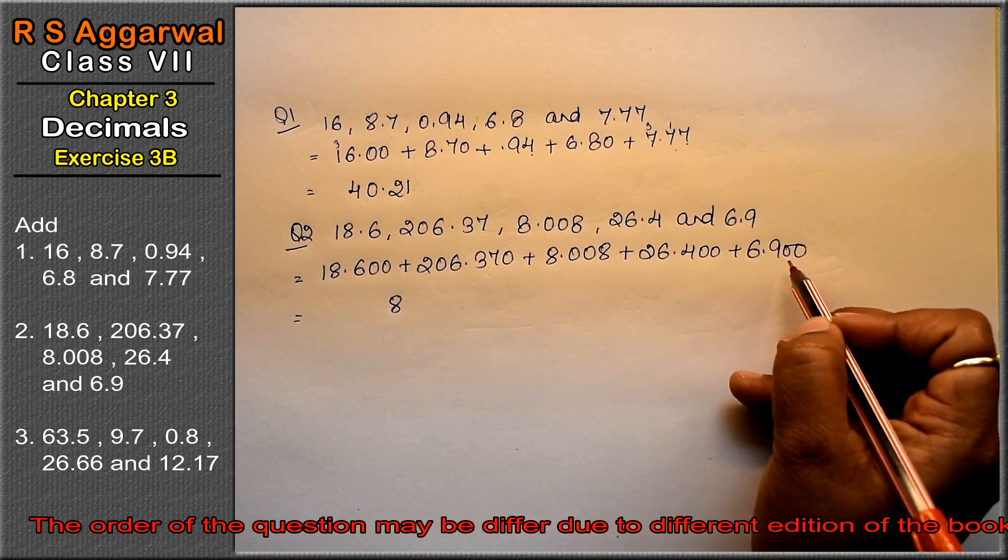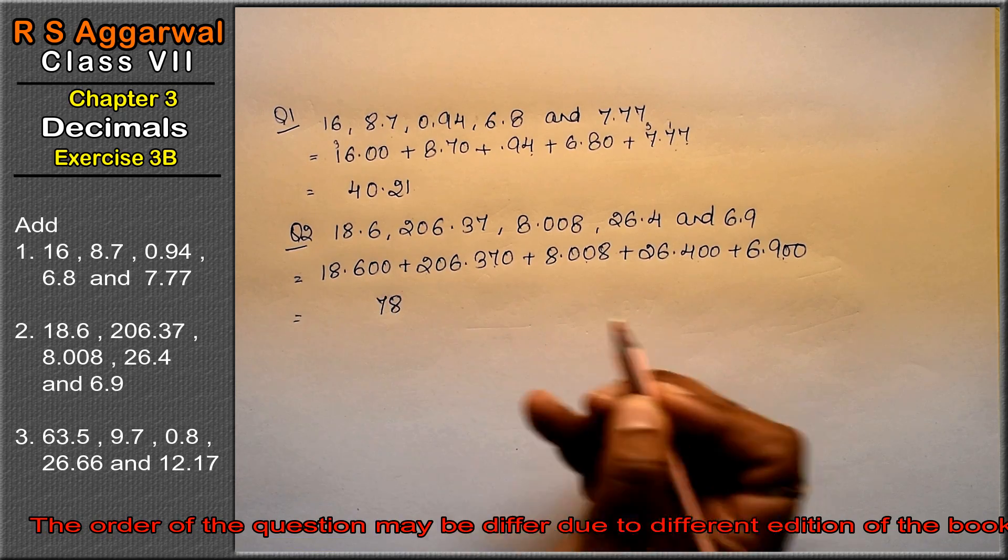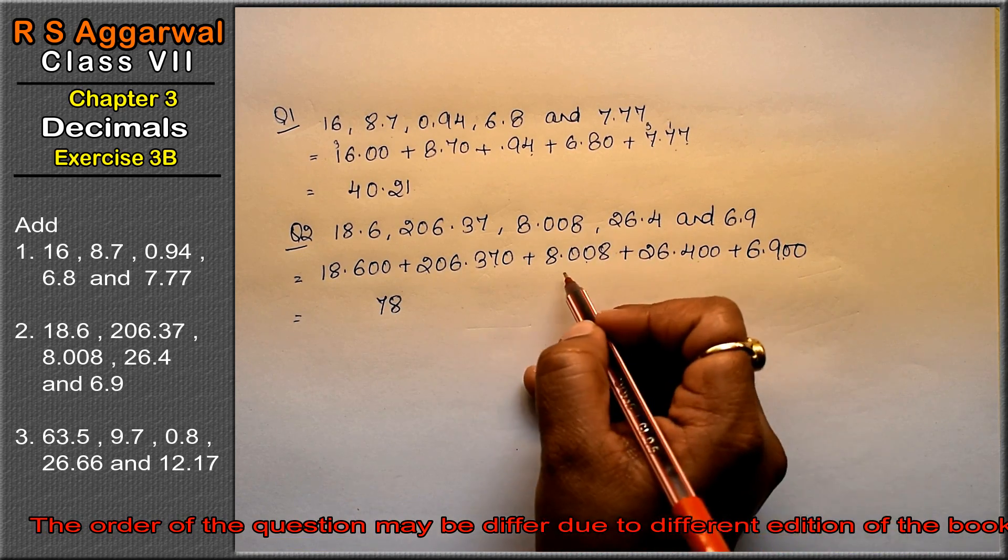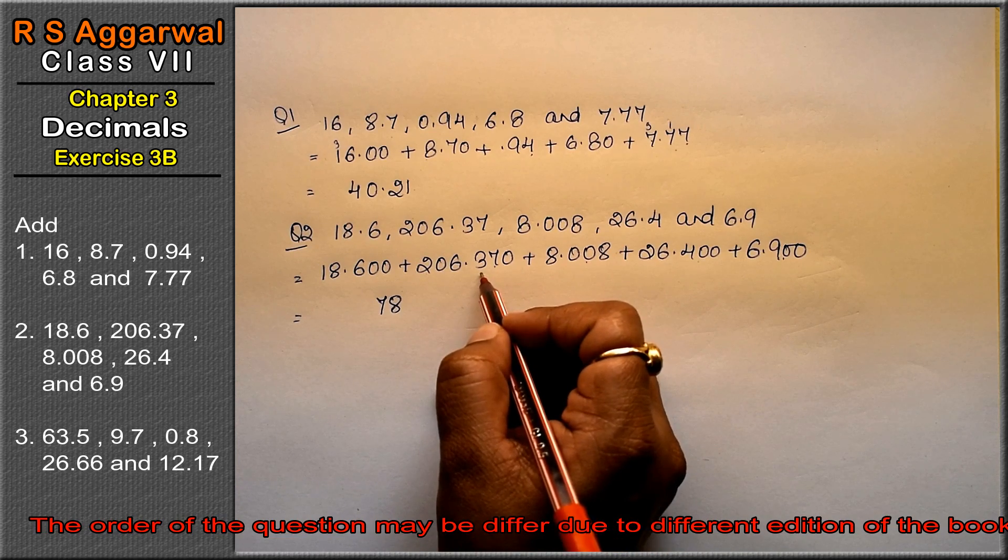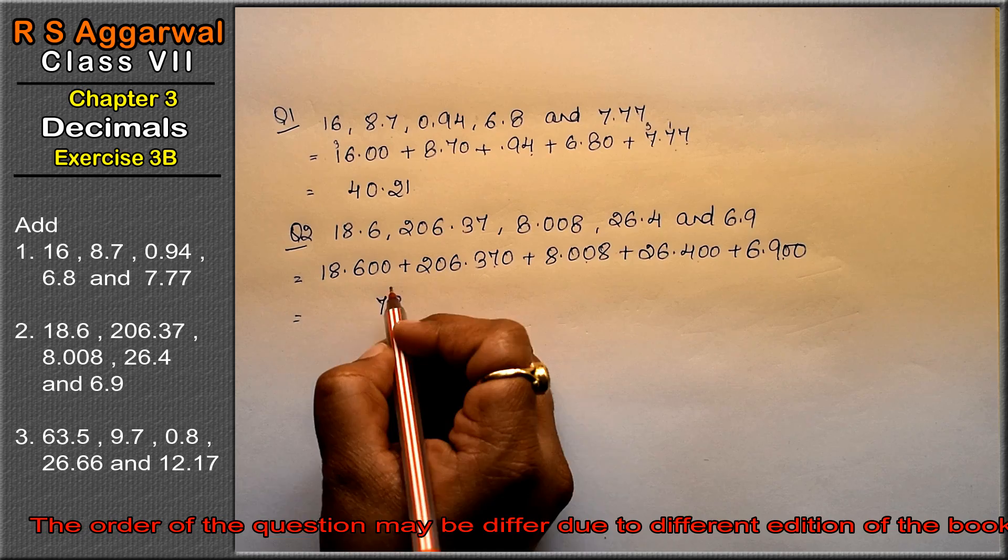So, 18.600 plus 206.370 plus 8.008 plus 26.400 plus 6.900. Add 0.008, 8.